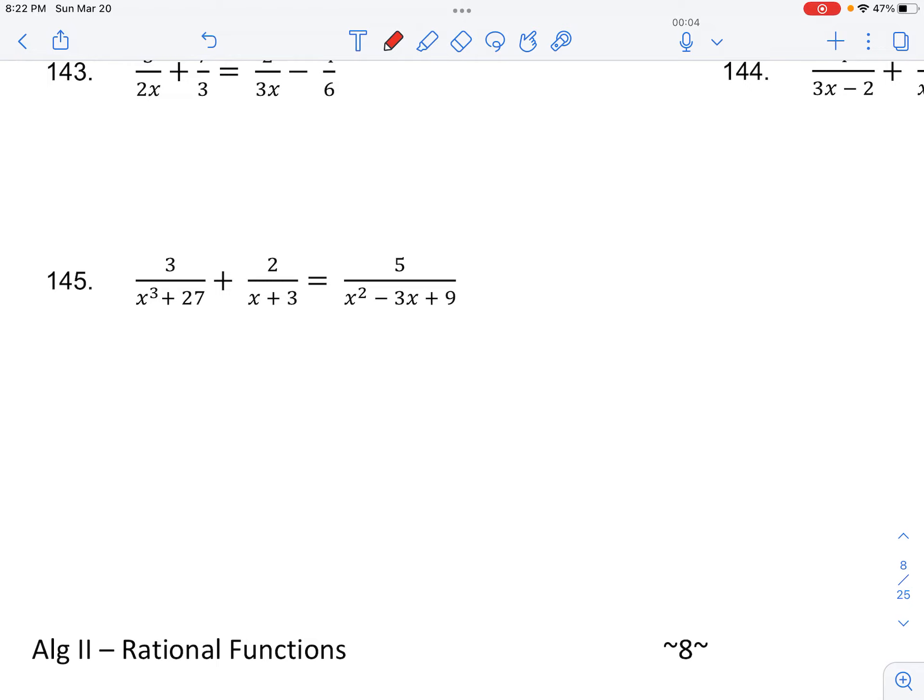Actually if we try to combine these two fractions here, which means that I would multiply this 2 over x plus 3 by the denominator of the other fraction, so x squared plus 9, then over an x squared minus 3x plus 9. In the denominator, when we would FOIL these two numbers, we would actually get x cubed plus 27.